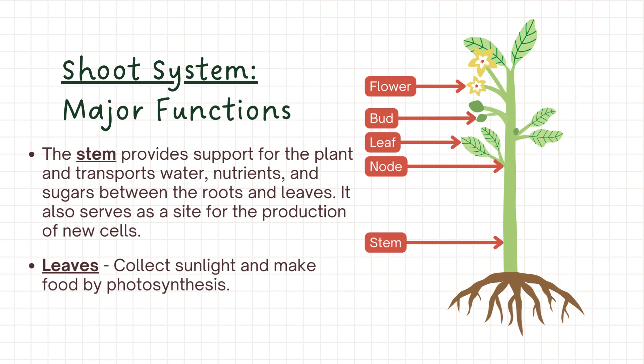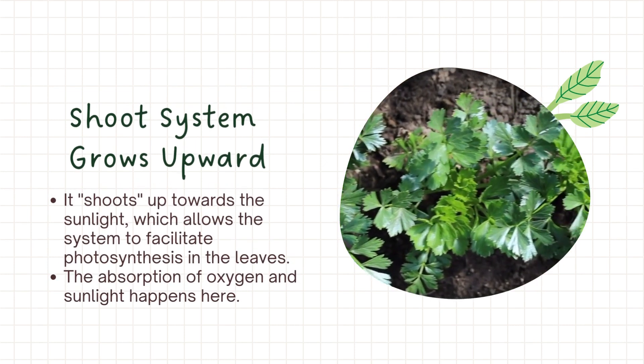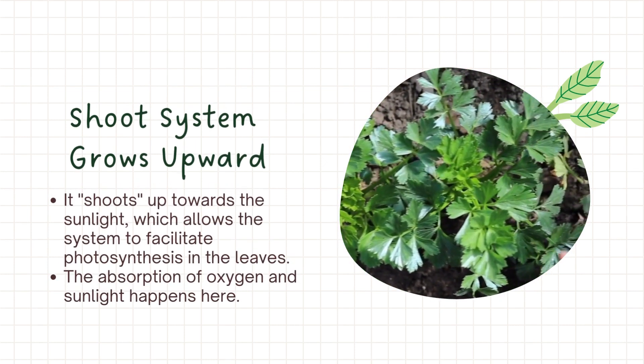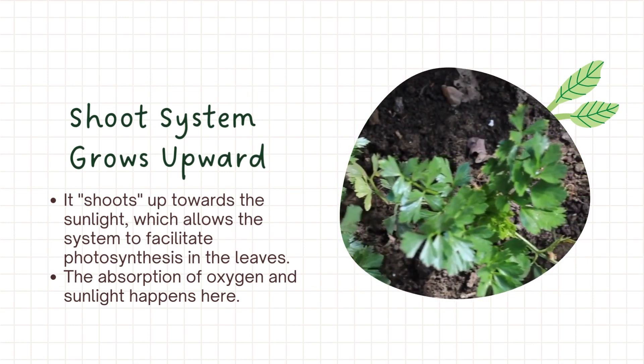The shoot system's major functions: the stem provides support for the plant and transports water, nutrients, and sugars between the roots and leaves. It also serves as a site for the production of new cells. Leaves collect sunlight and make food by photosynthesis. The shoot system grows upward toward the sunlight, which allows the system to facilitate photosynthesis in the leaves, and the absorption of oxygen and sunlight happens here.